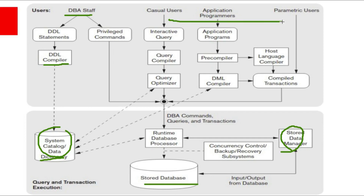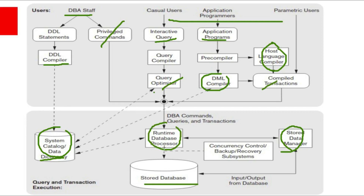Users interact with the database by using queries or through application programs. Application programs contain DML statements, which are compiled using a DML compiler. Other instructions are compiled by a host language compiler — for example, if you are using Java, instructions which are not DML instructions can be compiled using the Java compiler. All DBA commands, queries, and compiled transactions are run by the run-time database processor. Concurrency control, backup, and recovery systems are integrated into the run-time database processor for transaction management.